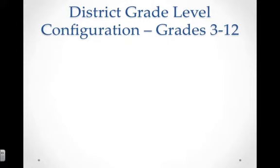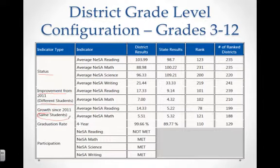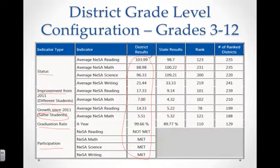The district grade level configuration, grades 3 through 12, combines all that information under a district profile. As before, you have status, improvement with different students, growth with the same students, graduation rate, and participation rate. You can see the information as it would pertain to Blair if this were our actual data.